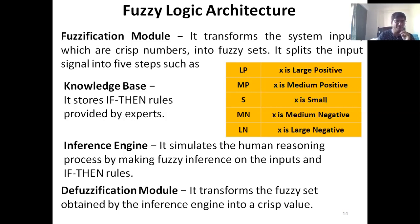The defuzzification module transforms the fuzzy values — because we are dealing with fuzzy values inside the system — it transforms the fuzzy set values obtained by the inference engine back into a crisp value. This is how the components of a fuzzy system work.